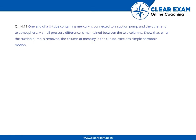Welcome back. Let us go through the question. One end of a U-tube containing mercury is connected to a suction pump and the other end to atmosphere. A small pressure difference is maintained between the two columns, so that when the suction pump is removed, the column of mercury in the U-tube executes simple harmonic motion.